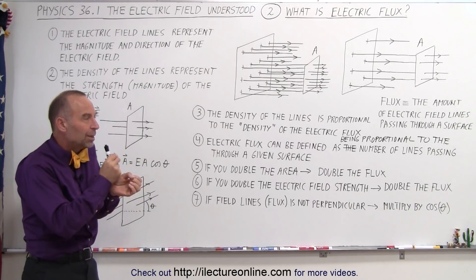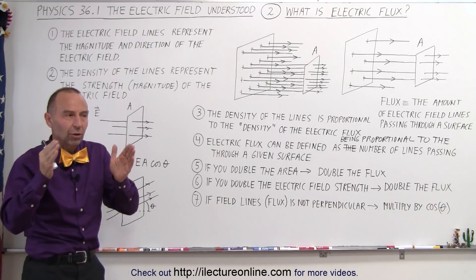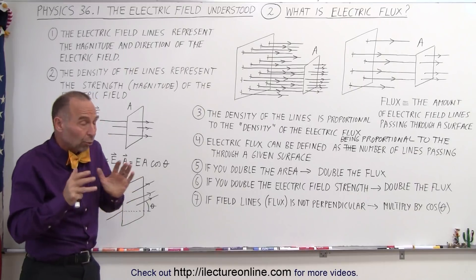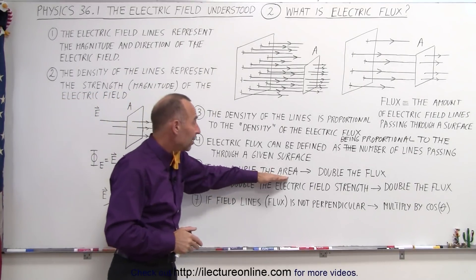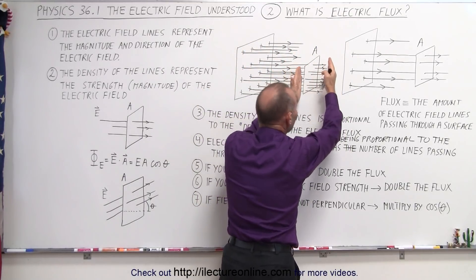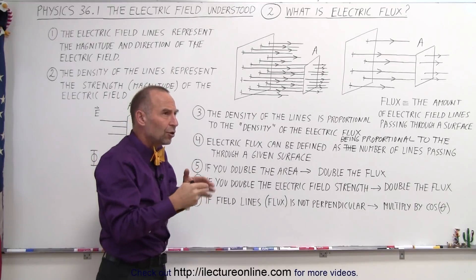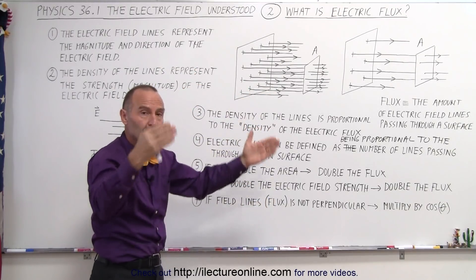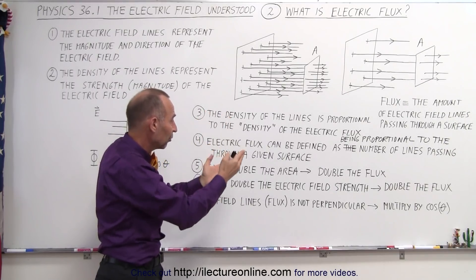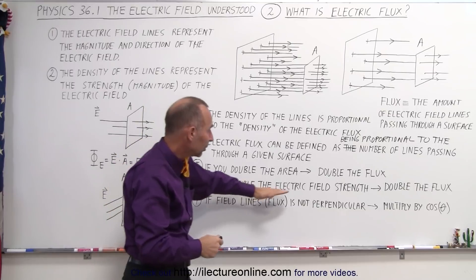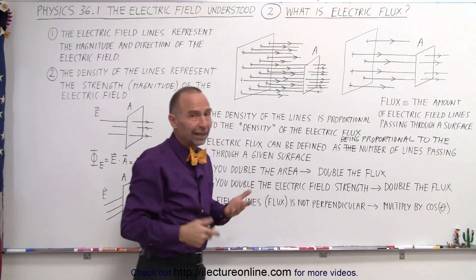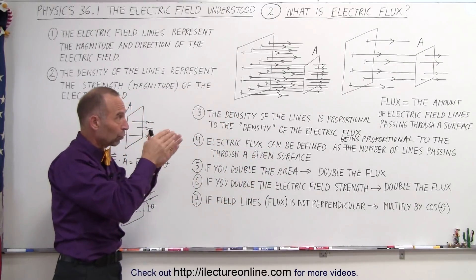The actual value of the flux — we'll show you how to calculate that in just a moment. What we should realize is that if you double the area, making it twice as big while leaving everything else the same, you'll have twice as much flux. You can have more flux by just allowing a greater window, a greater surface through which the lines can pass. Also, if you leave the size of the surface the same and you double the electric field strength, you'll also double the flux, because the density of the field lines will double, meaning more flux goes through the surface.